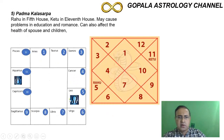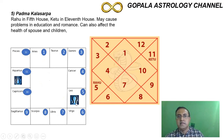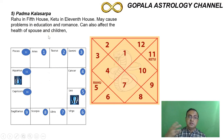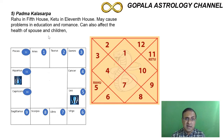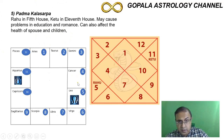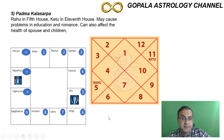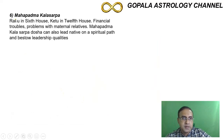In Padma Kala Sarpa Dosha, the fifth house represents education and children, so there will be serious consequences on academic education. The romantic life will be fully afflicted, and the health of the person's children will also be seriously affected — they will be frequently bringing their children to see a doctor. The next one is called Maha Padma Kala Sarpa Dosha, where Rahu goes to the sixth house and Ketu is in the twelfth house.